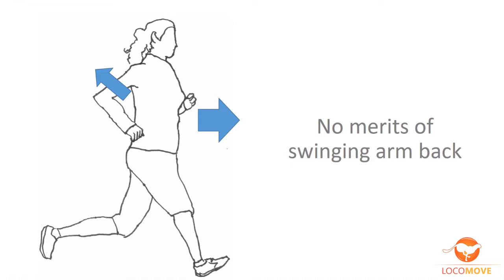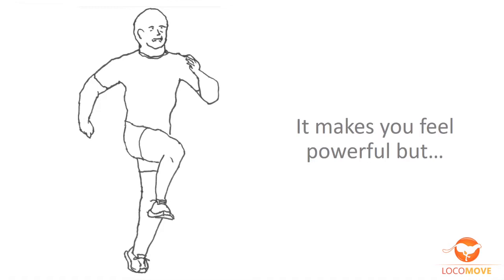If the dynamics are unconsolidated, the body movement gets inefficient. The reason why runners swing their arms back is because it gives a good feeling of force to the runners. It makes you feel powerful, but the force conflicts in your body movement dynamics.